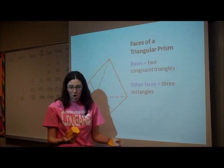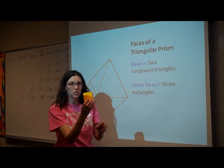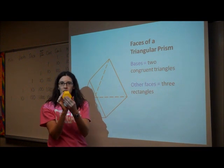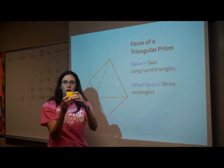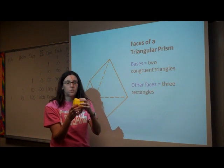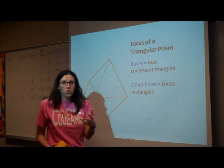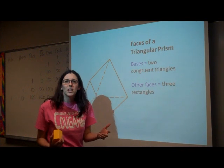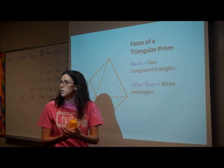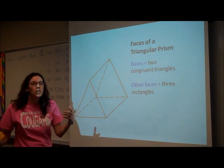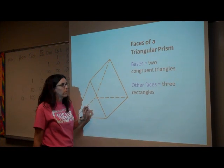Think back to your nets. With my hexagonal prism, I have a hexagon, a hexagon, and then every other face is a rectangle. So think of that when you're finding the surface area, because we don't really have a formula for these, because there are many types of prisms that we could have.